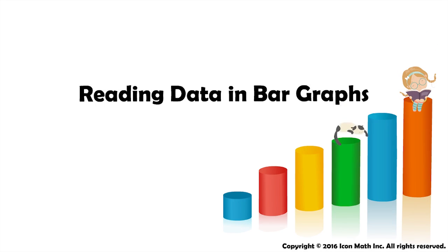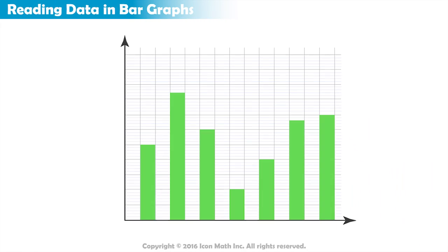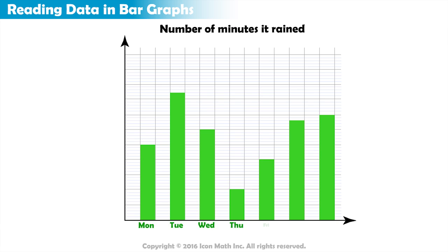Reading data in bar graphs. This graph shows the number of minutes it rained during the last week. The days of the week are labeled horizontally and the counts are labeled vertically. We want to answer a few questions based on the information in this graph.